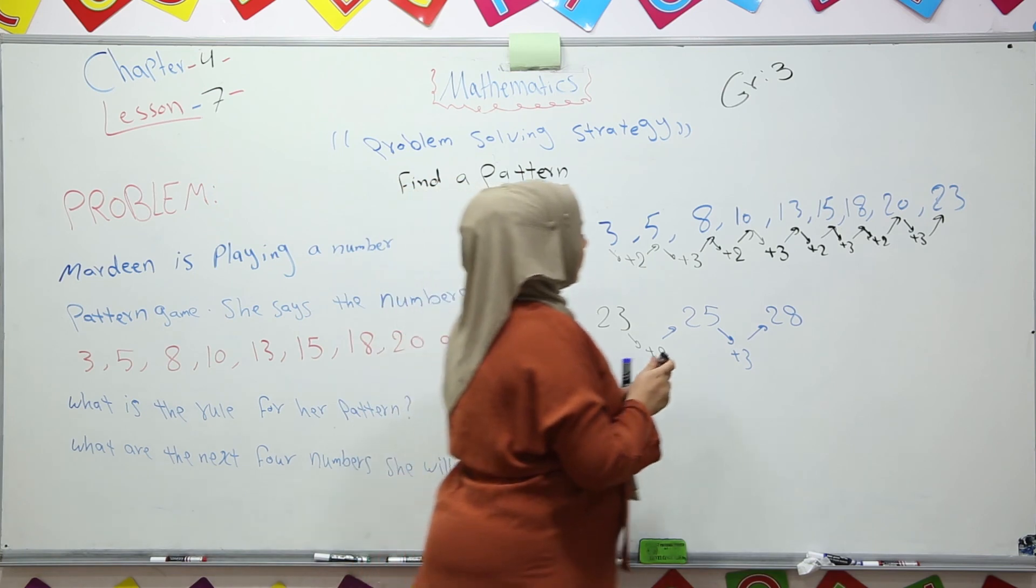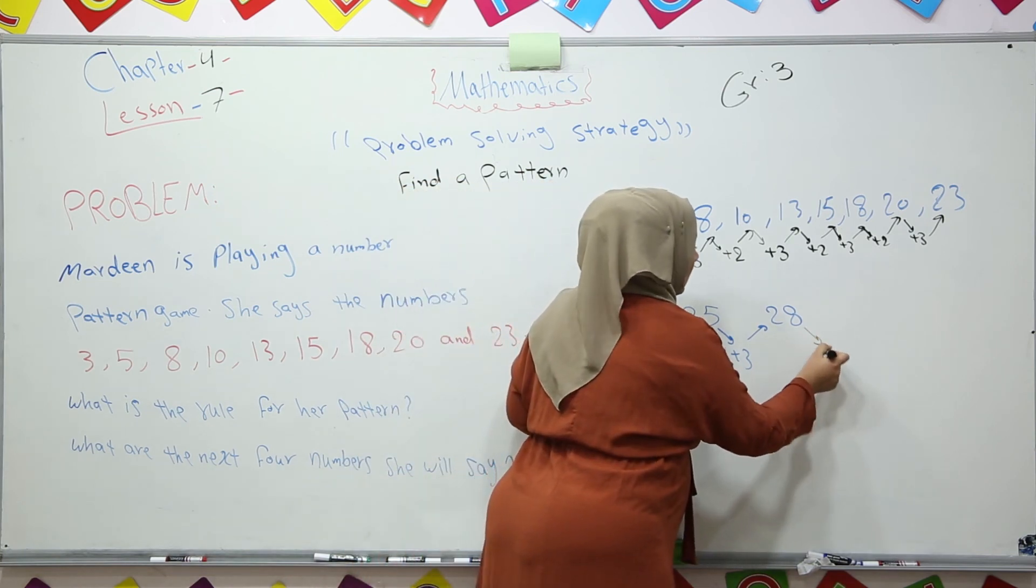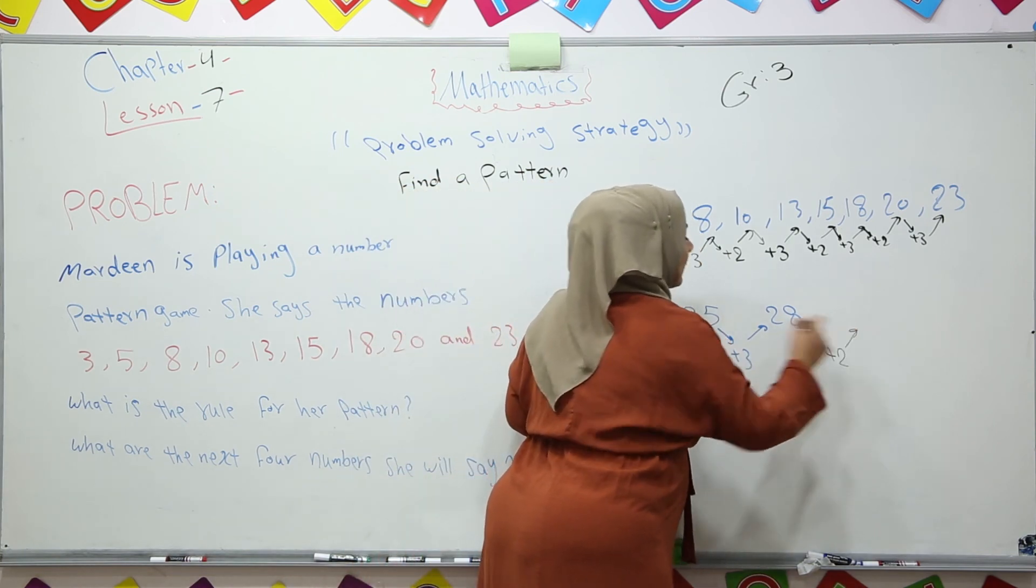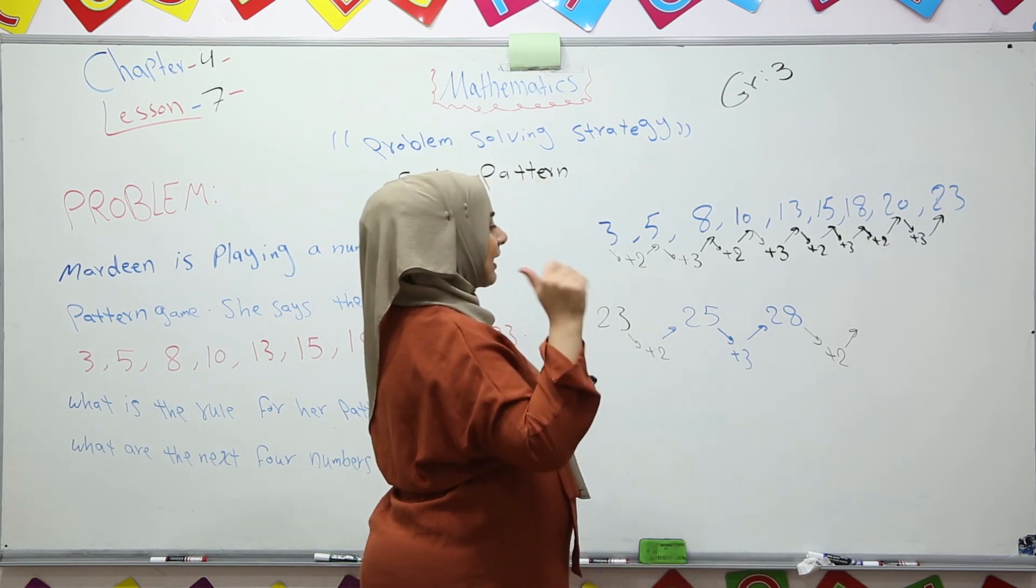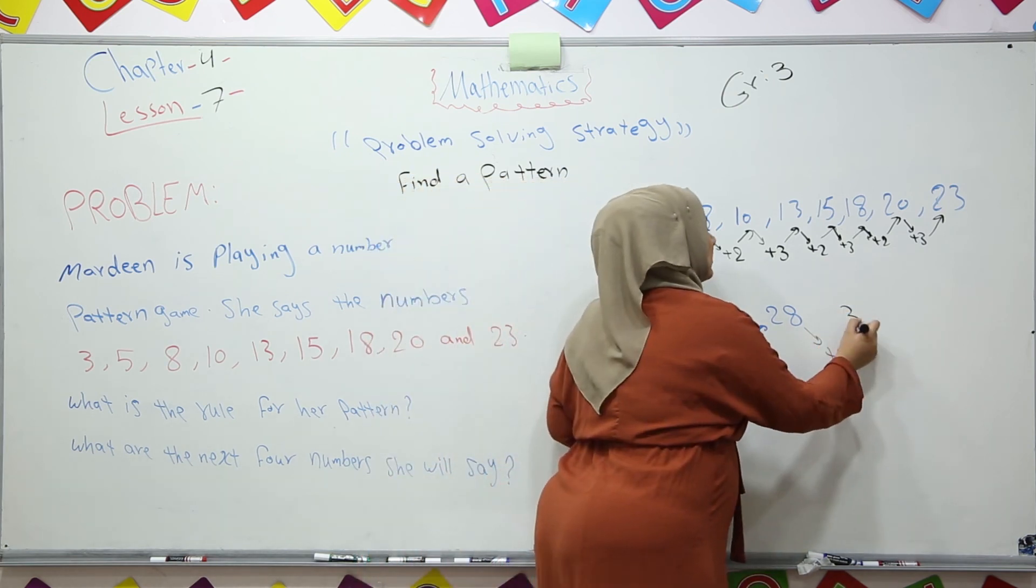This time added by 2 again. Plus 2. 28, 29, 30. So it is 30.